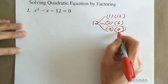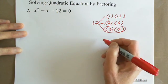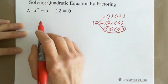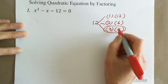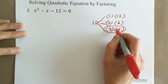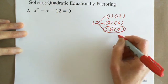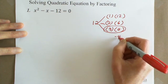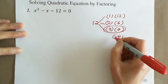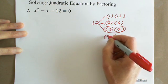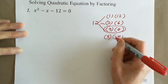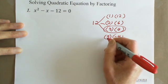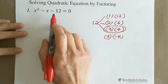Because these two numbers have only a difference of one, and since the result is negative, the bigger number has to be negative. So we need negative 4 multiplied by 3. Negative 4 times 3 equals negative 12, and negative 4 plus 3 equals negative 1. So negative 4 and 3 are our two numbers.